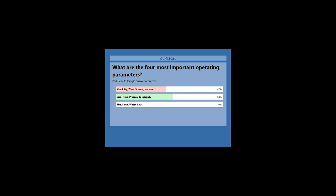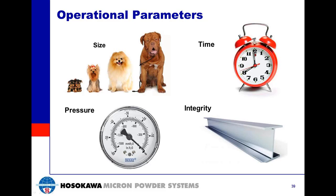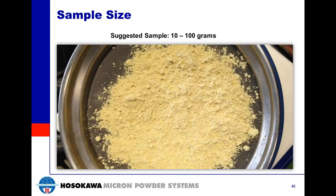The four operational parameters for accurate, reliable sieving analysis are: sample size, sieving time, sieving pressure, and sieve screen integrity. For sample size, when producing repeatable results, use the same sample size for each analysis. On the Hosokawa Micro Airjet Sieve, we suggest sample sizes anywhere from 10 to 100 grams per cycle, product dependent. If your product is lighter in density, use a smaller sample size around 10 grams; if heavier in density, use a larger sample size.